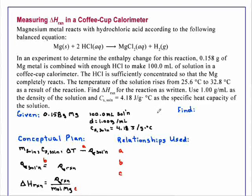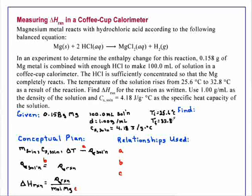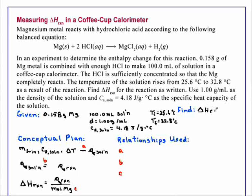During the course of this reaction, the temperature starts out initially at 25.6 degrees C and winds up at a final temperature of 32.8 degrees C. We want to find the enthalpy change delta H for this reaction.